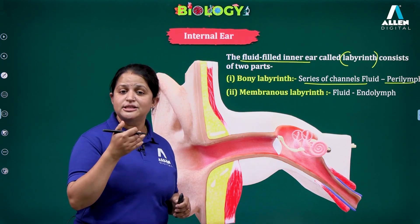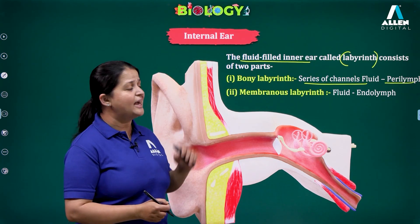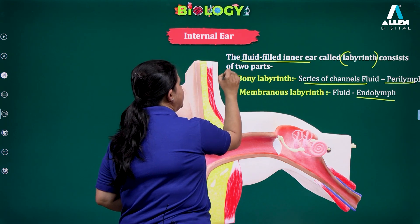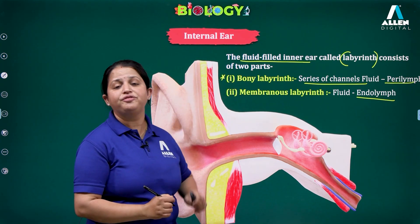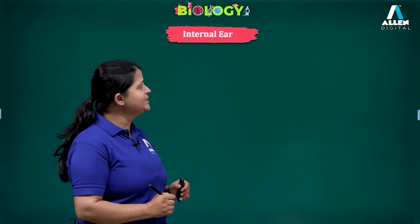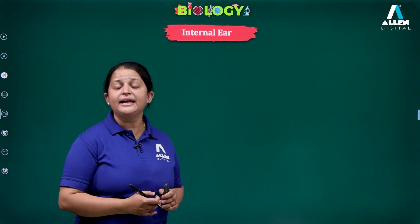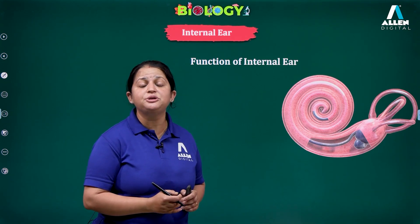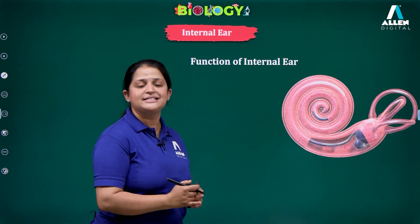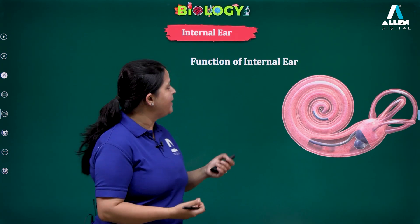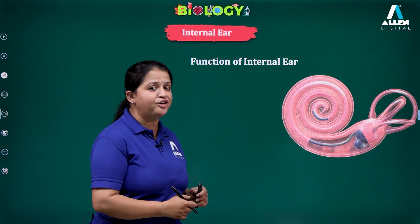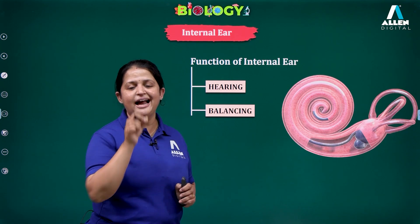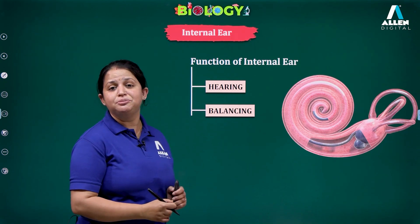The membranous labyrinth is present below the bony labyrinth and contains a fluid known as endolymph. The bony and membranous labyrinth are parts of the inner ear. Within the internal ear, the bony and membranous labyrinth are arranged into structures called the cochlea and the vestibular apparatus. The internal ear is mainly involved in hearing as well as balancing — both functions are controlled by the internal ear.